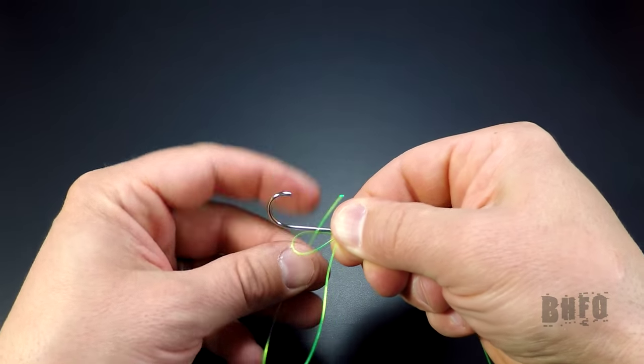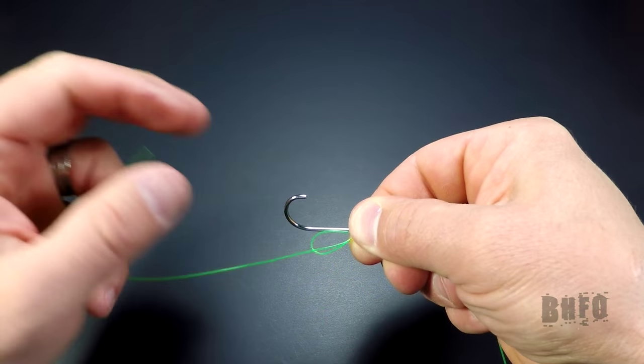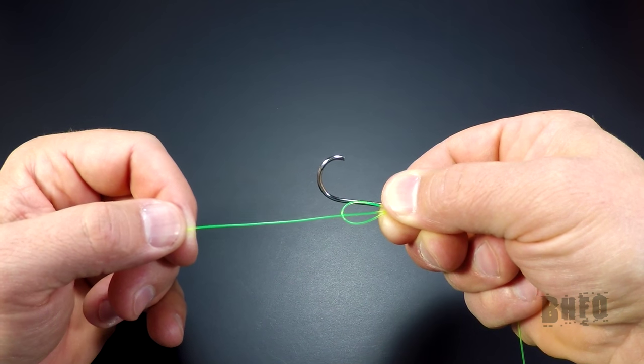Take the tag and put it through the loop you created at the bend. You should end up with something like this.